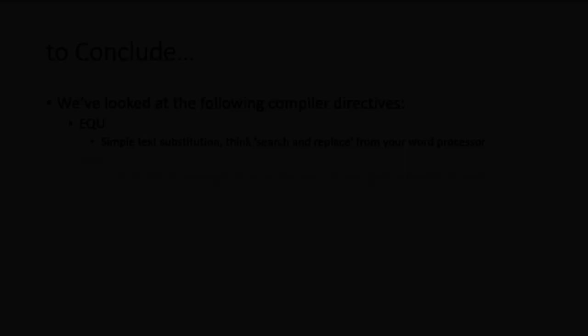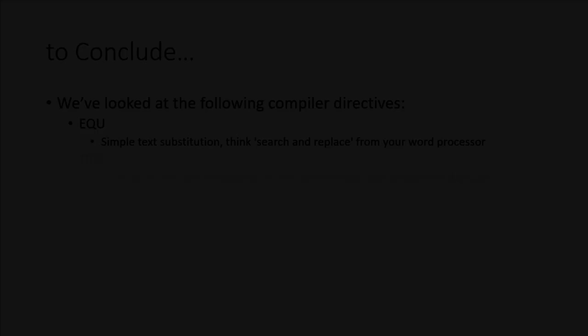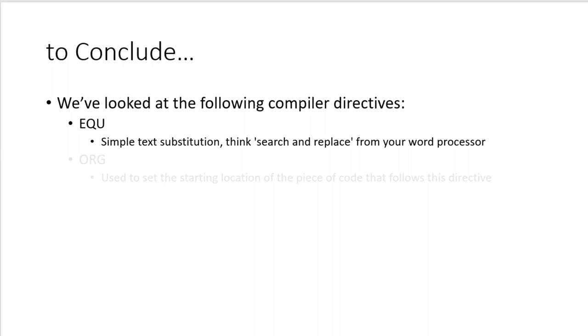In this video we've looked at the equate compiler directive. As mentioned, the equate directive is literally just a text replacement tool — taking whatever is on the left-hand side and replacing that with whatever text is on the right-hand side. Use this to make your code more readable and a lot easier to debug, especially if you have a third party checking your code.